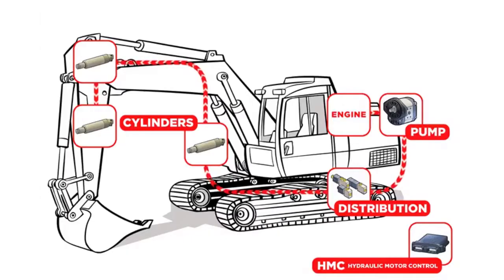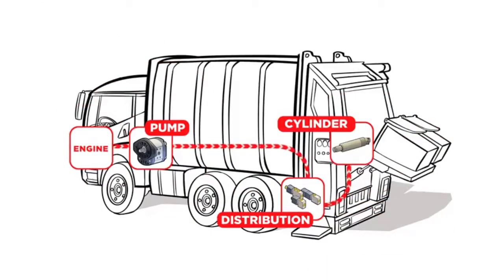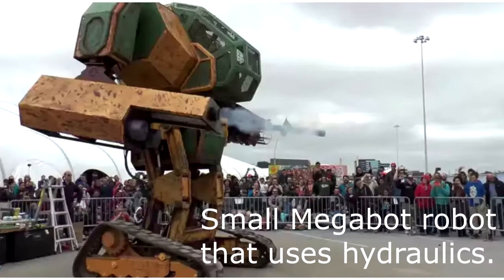These can be desirable properties in mobile hydraulic systems, which unlike industrial systems generally have reduced opportunity for the settling and precipitation of contaminants in the reservoir due to its relatively small volume.